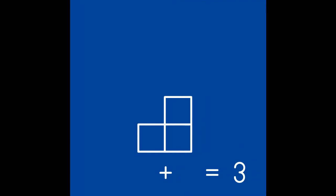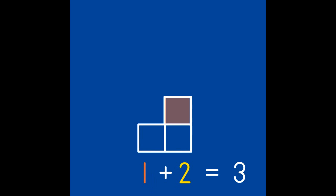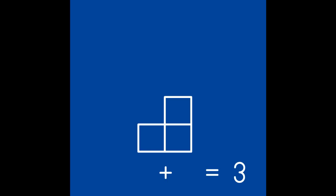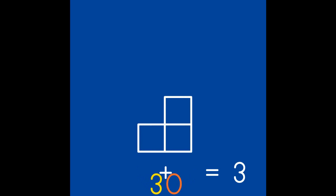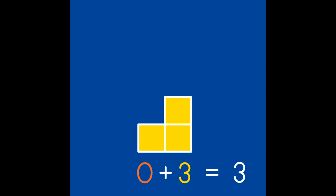Let's review combining the partners of 3. 2 put together with 1 is the same as 3. Or 1 together with 2 is the same as 3. 3 and 0 are partners of 3. Or 0 and 3 are partners of 3.